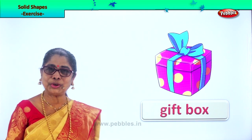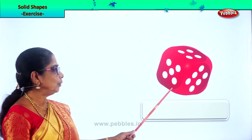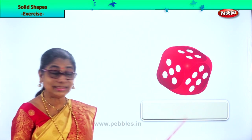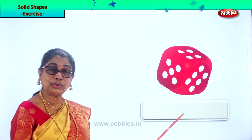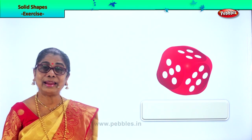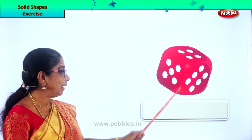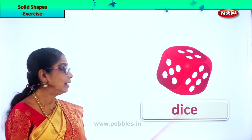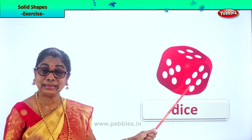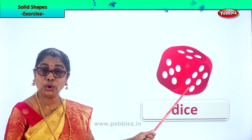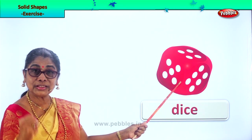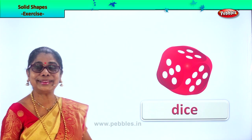Let's look at another example of a cube. Look — you play with this, don't you? It's a dice. You throw the dice, count the dots, and you move on — snake and ladder, ludo. Any other game — dice is also an example of a cube. It can roll when you throw. Dice is a solid shape cube.